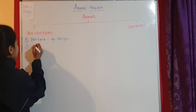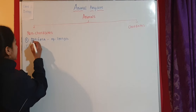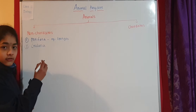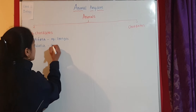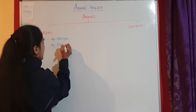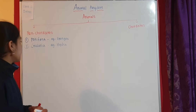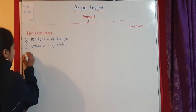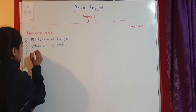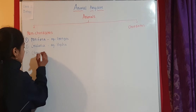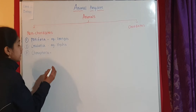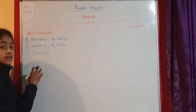The second phylum is Cnidaria, also called Coelenterata. This includes Hydra, Aurelia which is jellyfish, etc. This is the second phylum. The third phylum is Ctenophora.